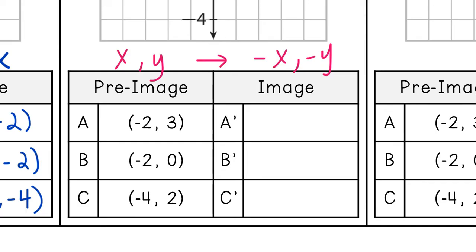So we're not switching anything. All we're doing is changing the sign. So (-2, 3) is going to turn into (2, -3). Next one is going to be (2, 0), but there's no such thing as negative zero, so just 0. And the last one is (4, -2).